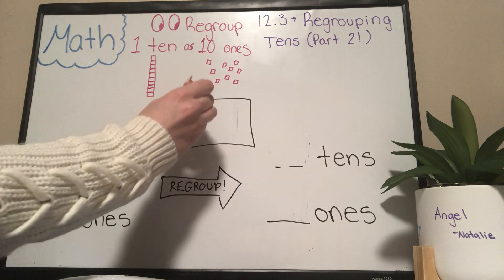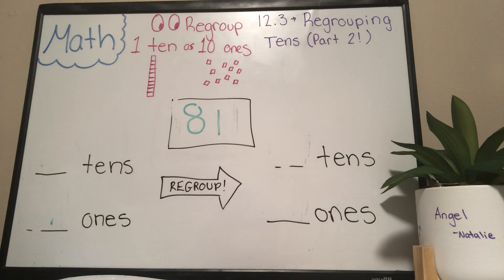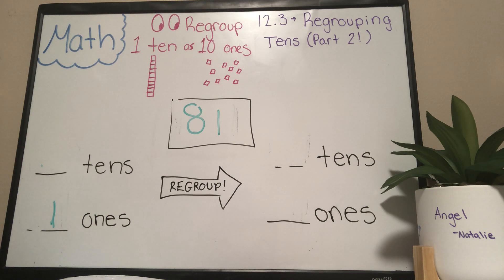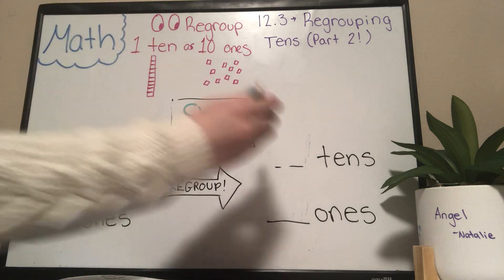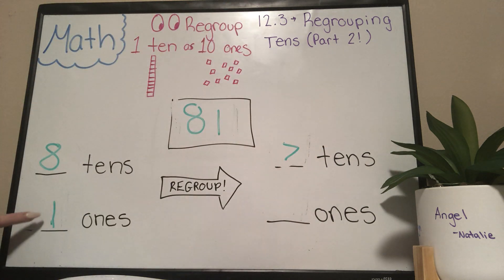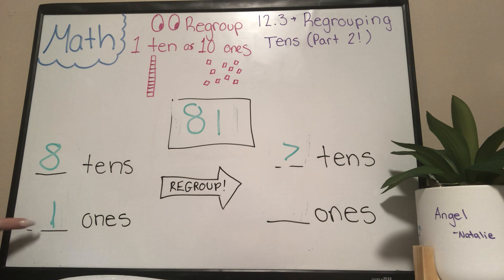Last one before our word problem is 81. How many ones are in 81? One. How many tens are in 81? Eight. Take away one of these tens — seven tens. Bring those ten ones down here. One plus ten? Eleven. There's your answer for that one.